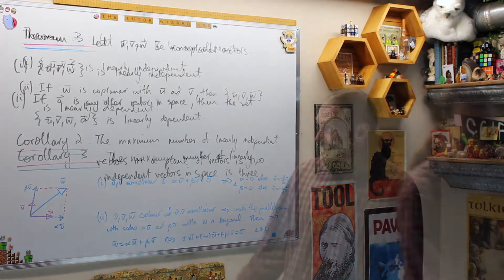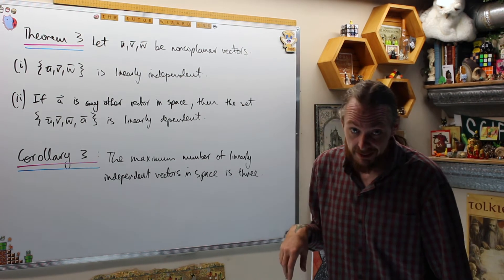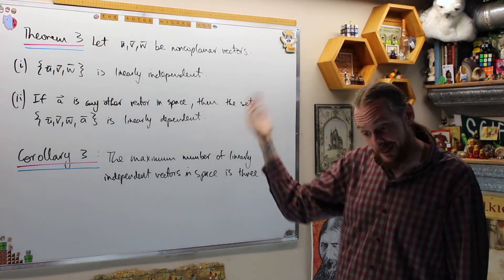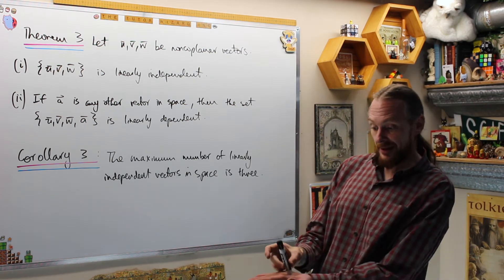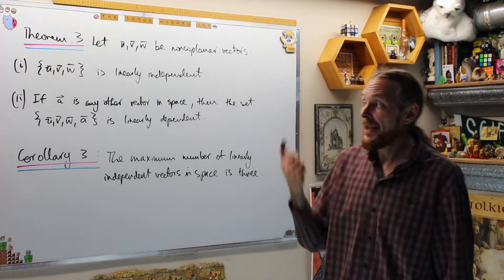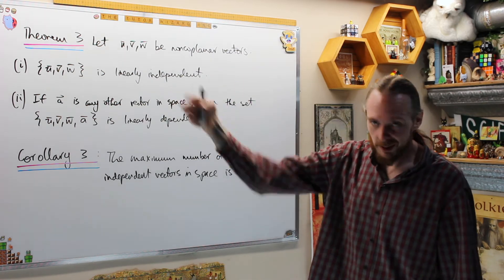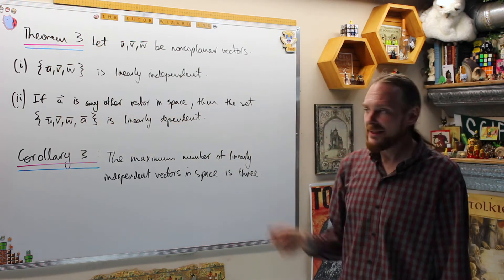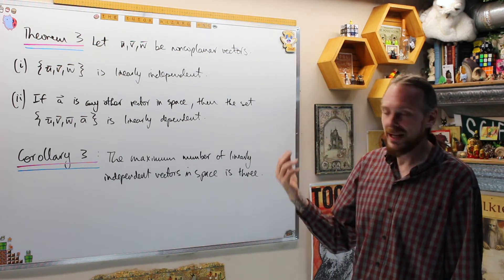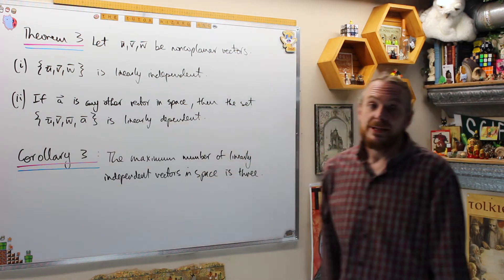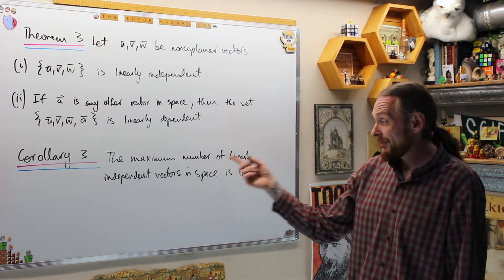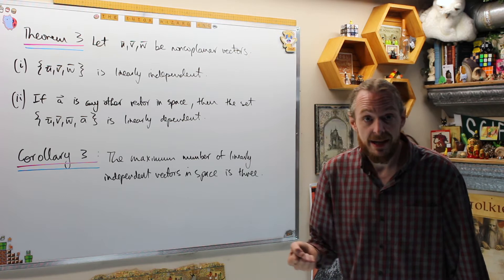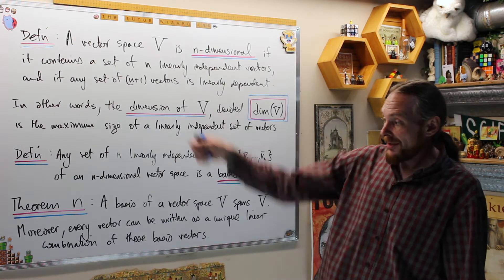Theorem 3: let u, v, and w be non-coplanar vectors. First, any three non-coplanar vectors in space are linearly independent. Second, if a is any other vector in space, then the set {u, v, w, a} is always linearly dependent. Corollary 3: the maximum number of linearly independent vectors in space is 3 — and this is why we call space three-dimensional.